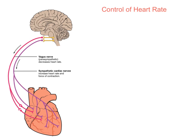Hello everyone. In this video I'm going to go through the control of the heart rate by the sympathetic and parasympathetic nervous system. You tend to really only study this at A2 level, so this video is aimed for sixth formers studying the module of nerves and nervous control.